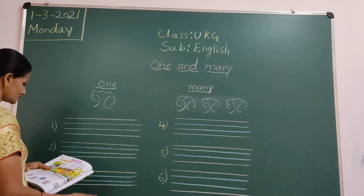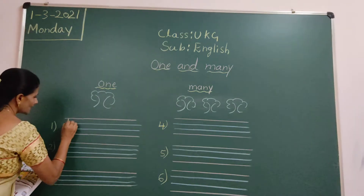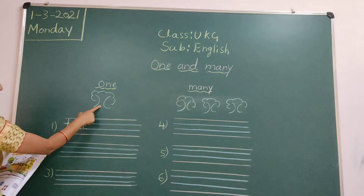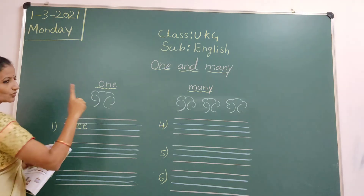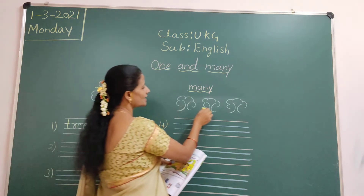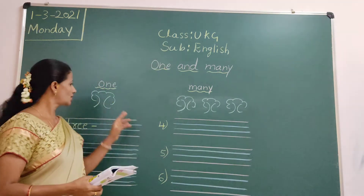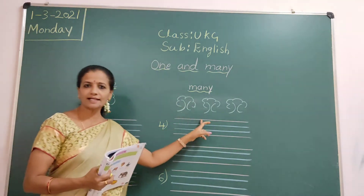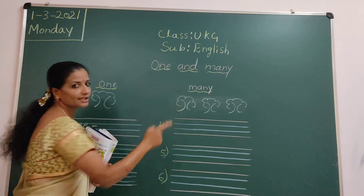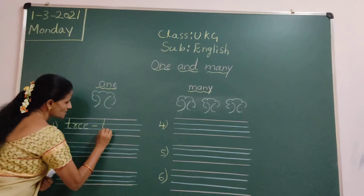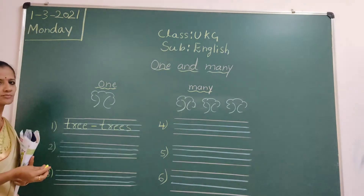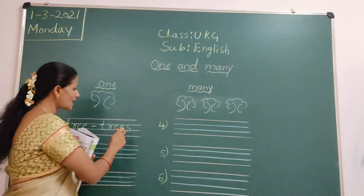So first one: tree. T-R-E-E. One tree means we will write 'tree' — put one small dash in the center. Three trees are there means many. One tree, three trees. That is many. One, many. We have to add S for many. More than one, we add S. Tree, trees.